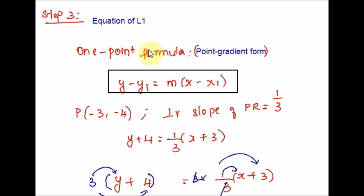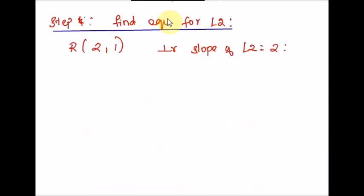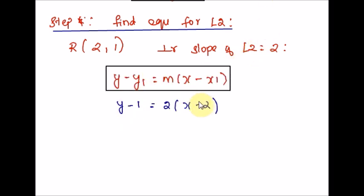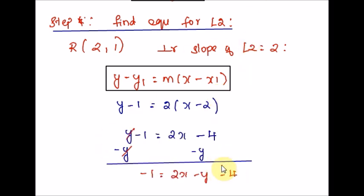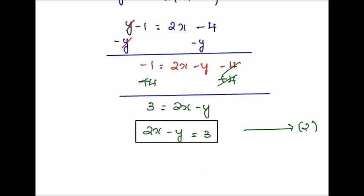We now have the equation for line L1. In the same way, we find the equation for L2. In the previous step we used Q and the perpendicular slope of L1; here we use R and the perpendicular slope of L2. Plugging these into the one-point formula, distributing, subtracting y from both sides, adding 4 to both sides, and swapping, we get equation number 2.